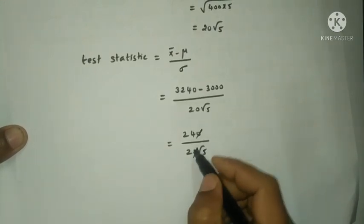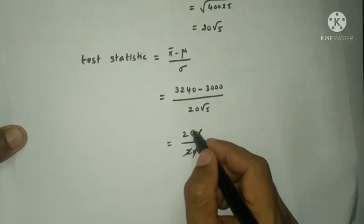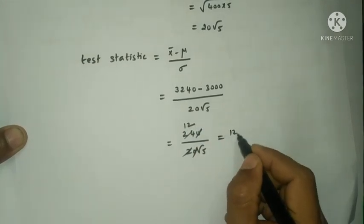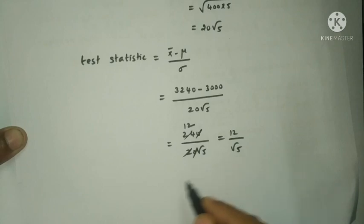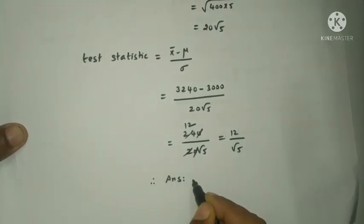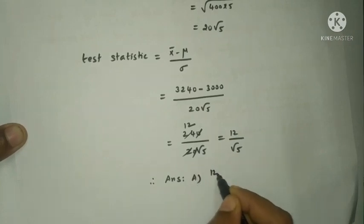That is equal to 240 divided by 20 root 5, which equals 12 divided by root 5. Therefore, the answer is option A, 12 divided by root 5.